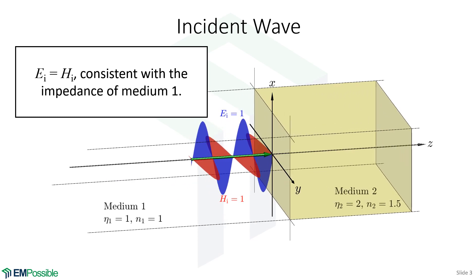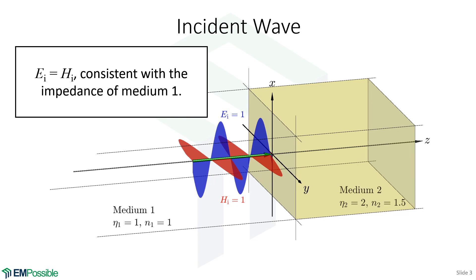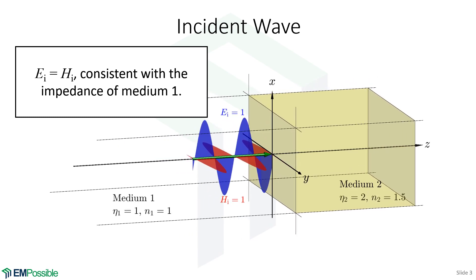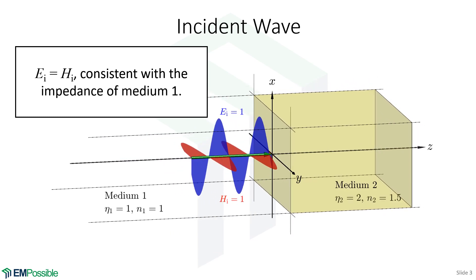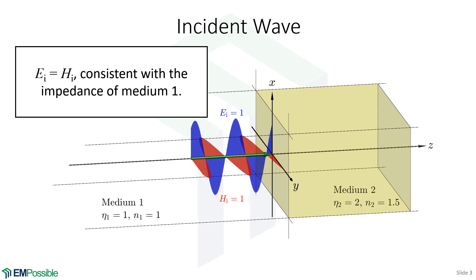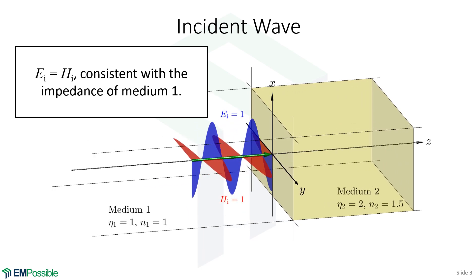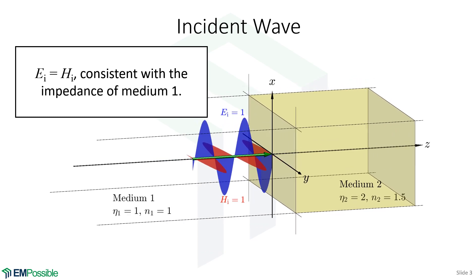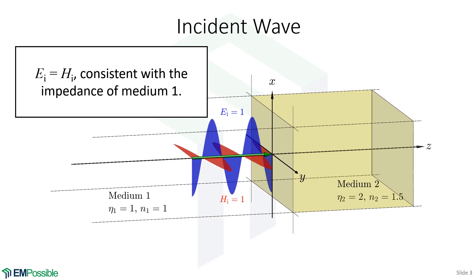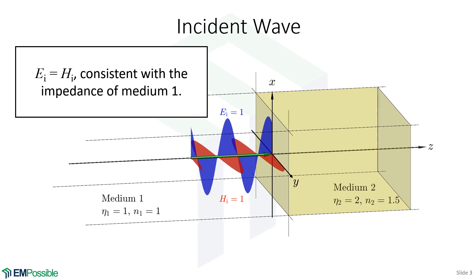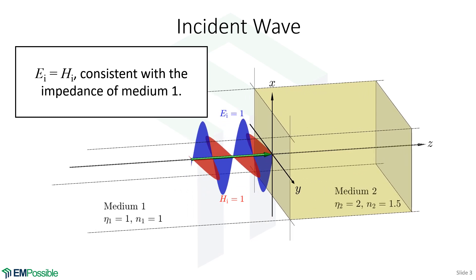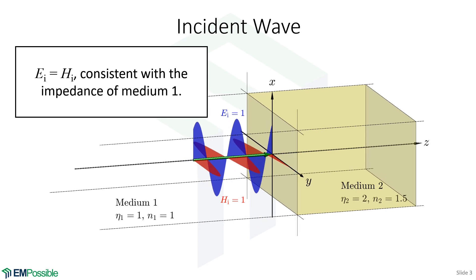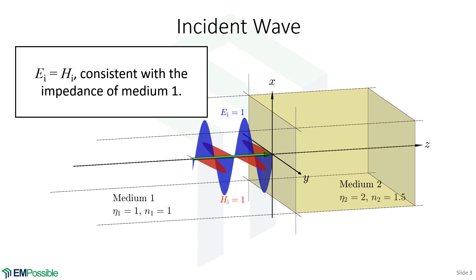It's a little bit unrealistic to have an impedance of one. More typically, the impedance will be 200 or 300 ohms. But just to keep the numbers in this example simple, we're going to let the impedance be one and two. Now we ask the question: what happens on the other side of that interface? We know that there is a transmitted wave, but we really don't know what that looks like.